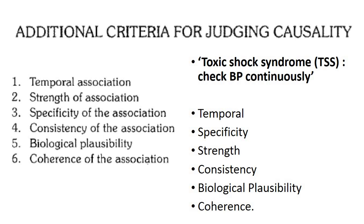We are moving chapter-wise from the beginning. All 16 slides are arranged chapter-wise. The first mnemonic is from epidemiology — the criteria for judging causality, called Hill's criteria or Bradford Hill's criteria. This consists of six criteria: temporal association, strength of association, specificity, consistency of the association, biological plausibility, and coherence of the association.